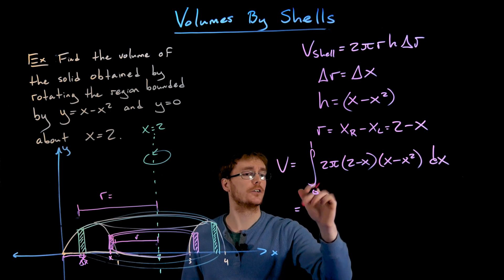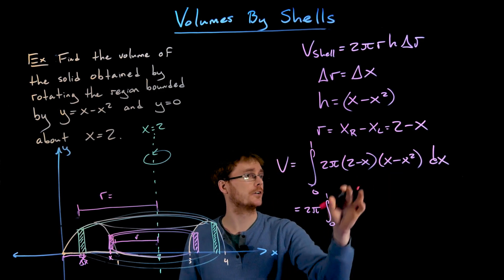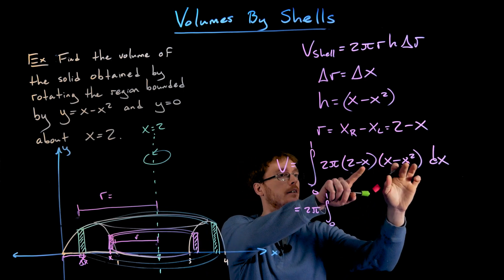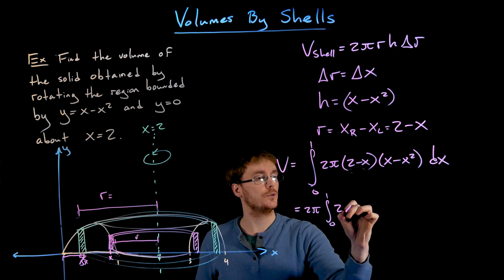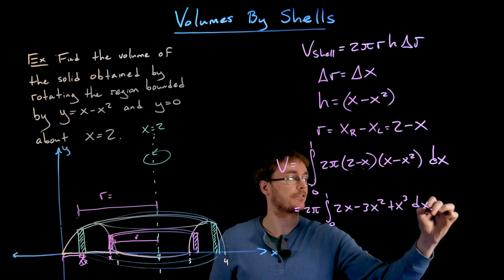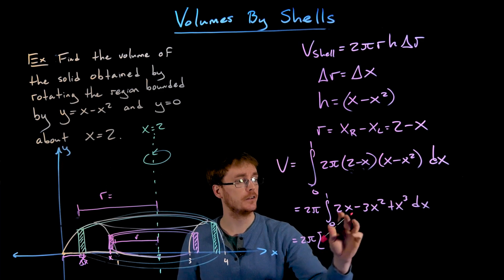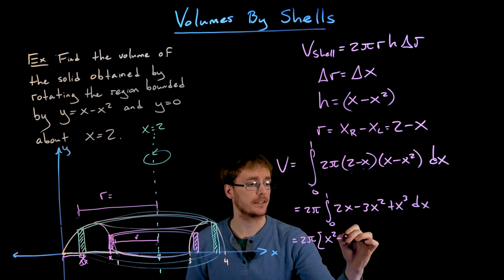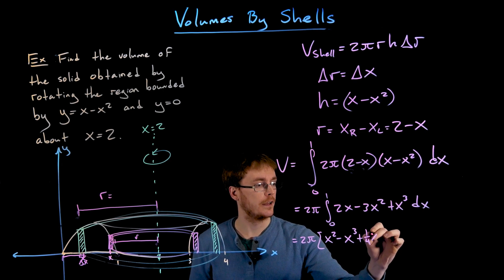Pulling out the common factor of 2π and expanding the factors: (2 minus x) times (x minus x squared) gives 2x minus 2x squared minus x squared plus x cubed, which combines to 2x minus 3x squared plus x cubed. Now we find the antiderivative: the antiderivative of 2x is x squared, of negative 3x squared is negative x cubed, and of x cubed is one-fourth x to the fourth.